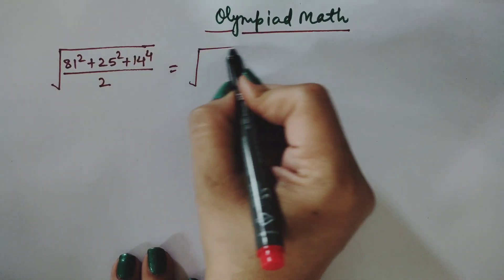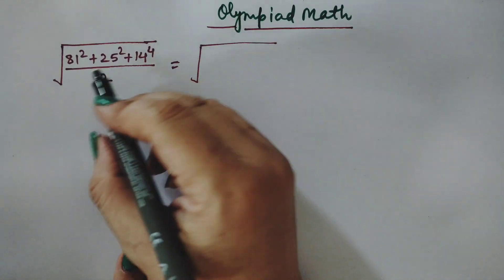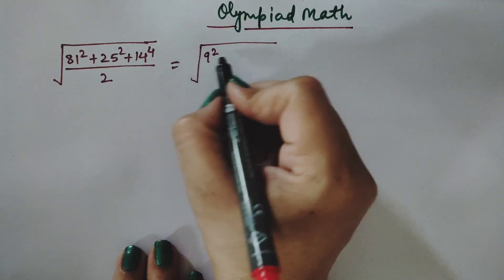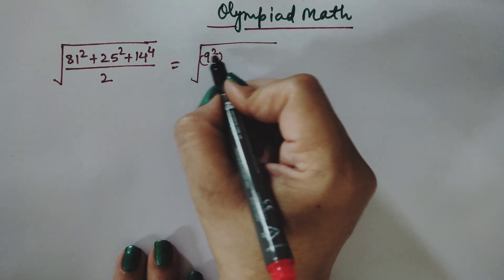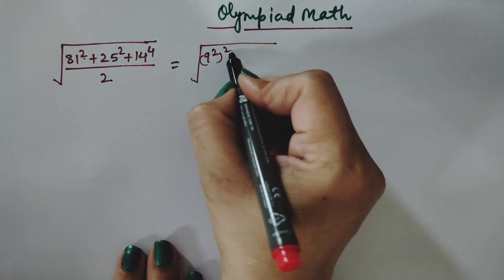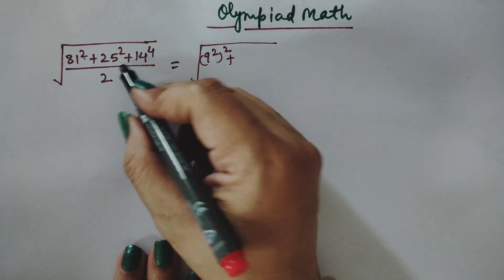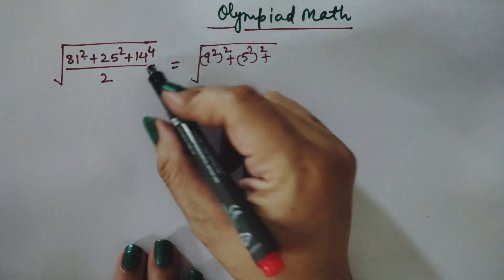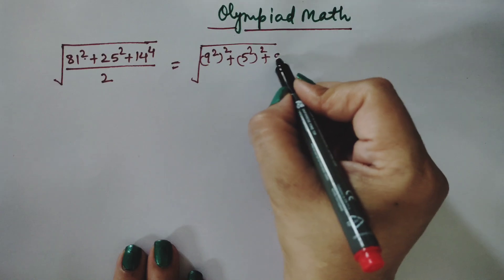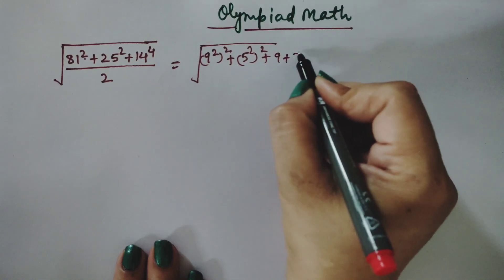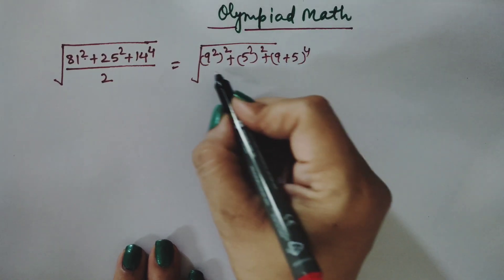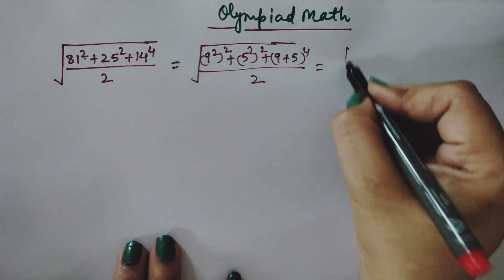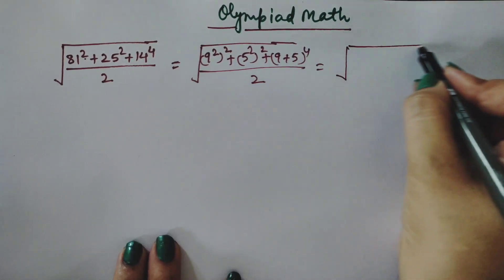First, we write 81 as 9 squared, so 81 squared becomes (9²)². Similarly, 25 is 5 squared, so 25 squared becomes (5²)². And 14 we write in terms of 9 and 5 as (9+5), raised to the power 4 divided by 2.